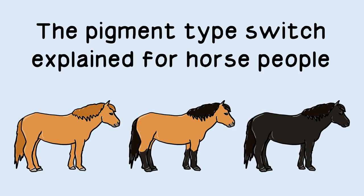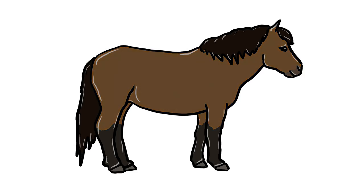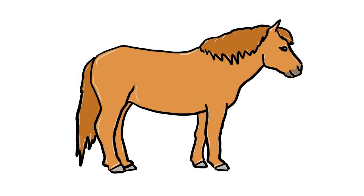The pigment type switch explained for horse people. This is a bay horse. How come there are not only bay horses but also blacks and chestnuts? What genes are responsible for this and how do they interact? The concept we need to understand these colors is called the pigment type switch. It explains the distribution of red and black color on the horse.